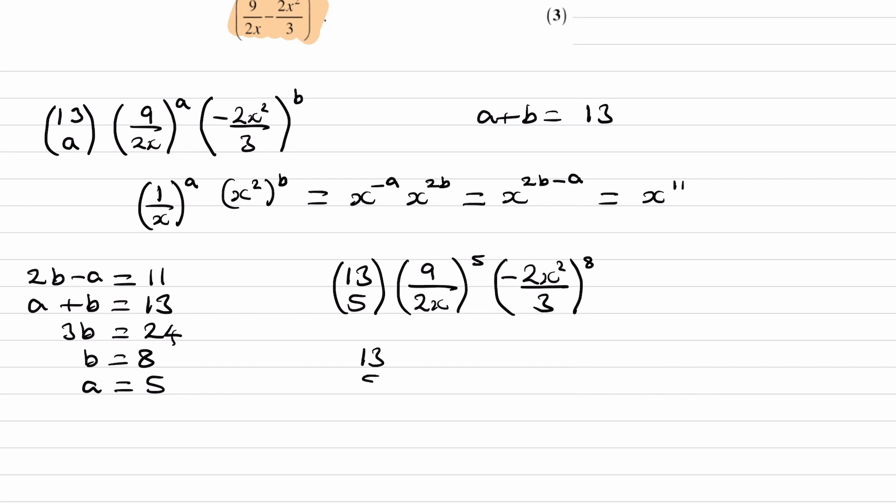So that will be 13 choose 5 multiplied by 9 over 2 to the power of 5, multiplied by minus 2 over 3 to the power of 8. We know there will also be an x to the power of 11 coming out. We can just ignore that for now.